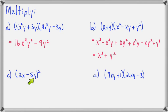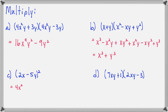Let's look at part C: 2x minus 5y, squared. We can use our squaring shortcut here. 2x times 2x is 4x squared. For the middle term, we do 2x times negative 5y times 2: 2x times negative 5y would be negative 10xy, and negative 10xy times 2 would be negative 20xy. For the last term, negative 5y times negative 5y would make positive 25y squared.